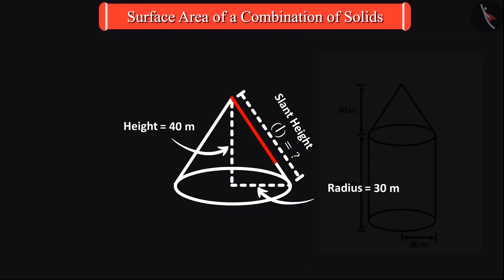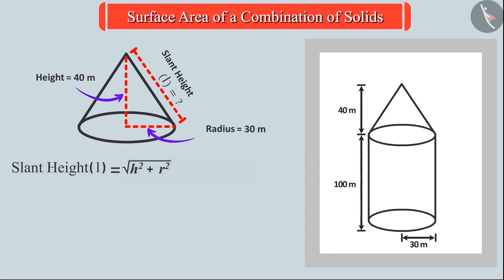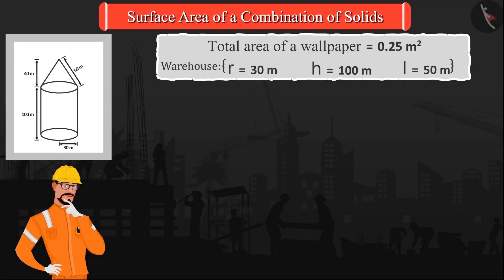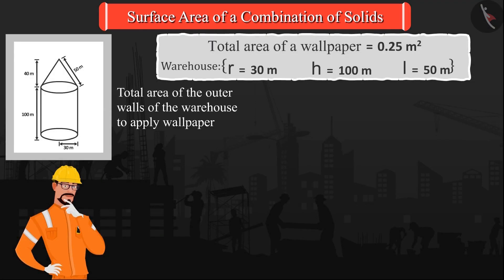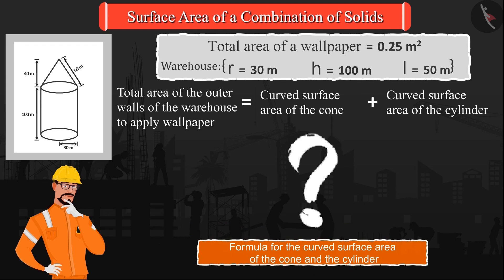Can you help the engineer find the slant height? The slant height can be found by substituting all the values in this formula. Now, to apply the wallpaper, let us quickly find out the total area of the outer walls of the warehouse, which is equal to the curved surface area of the cone and the cylinder. Can you give the formula for the surface area of the cone and the cylinder?